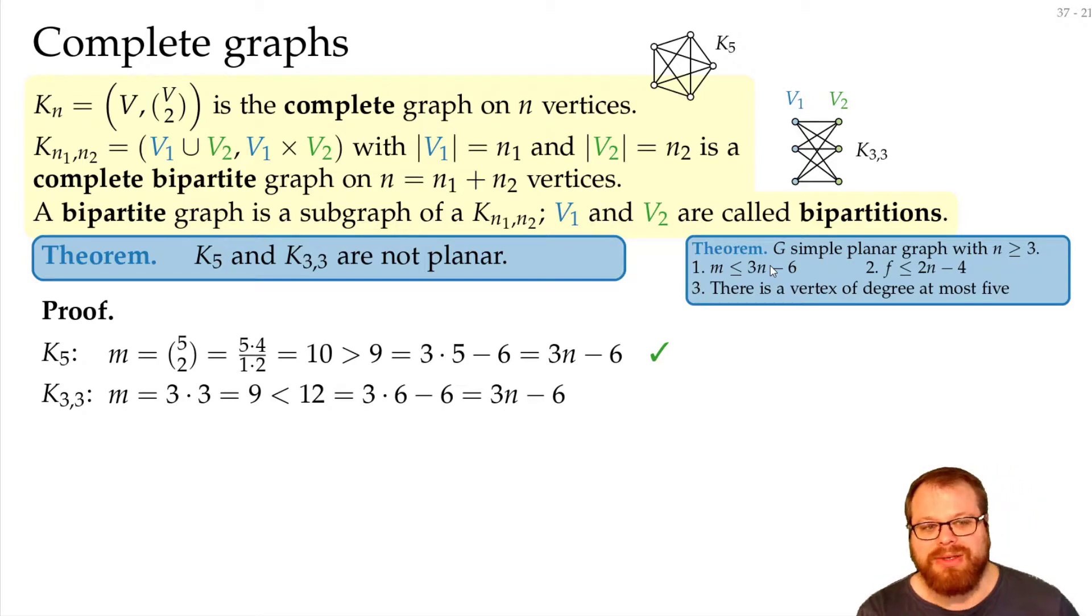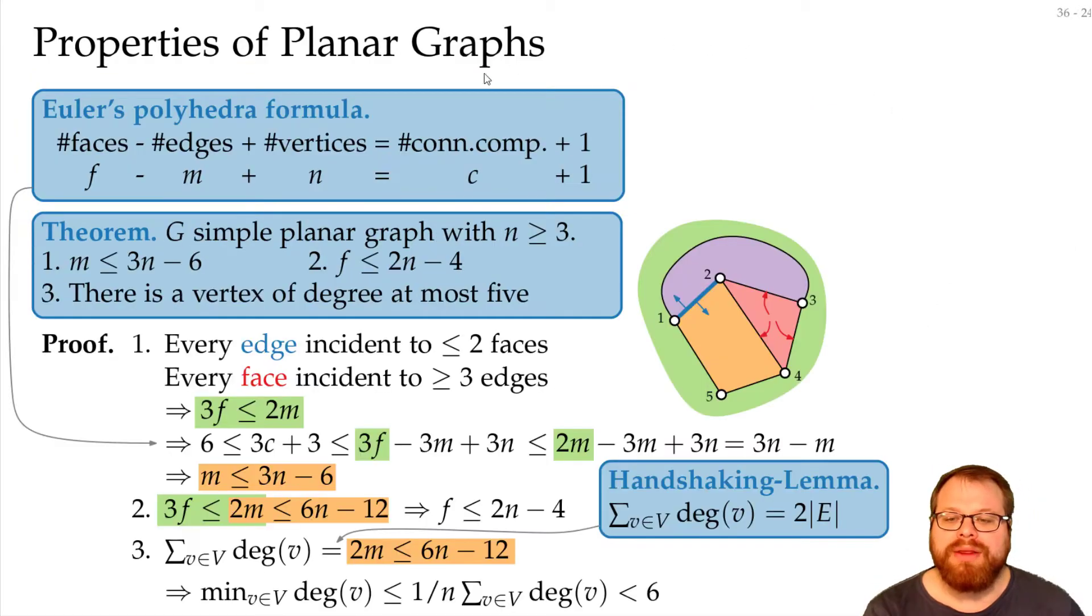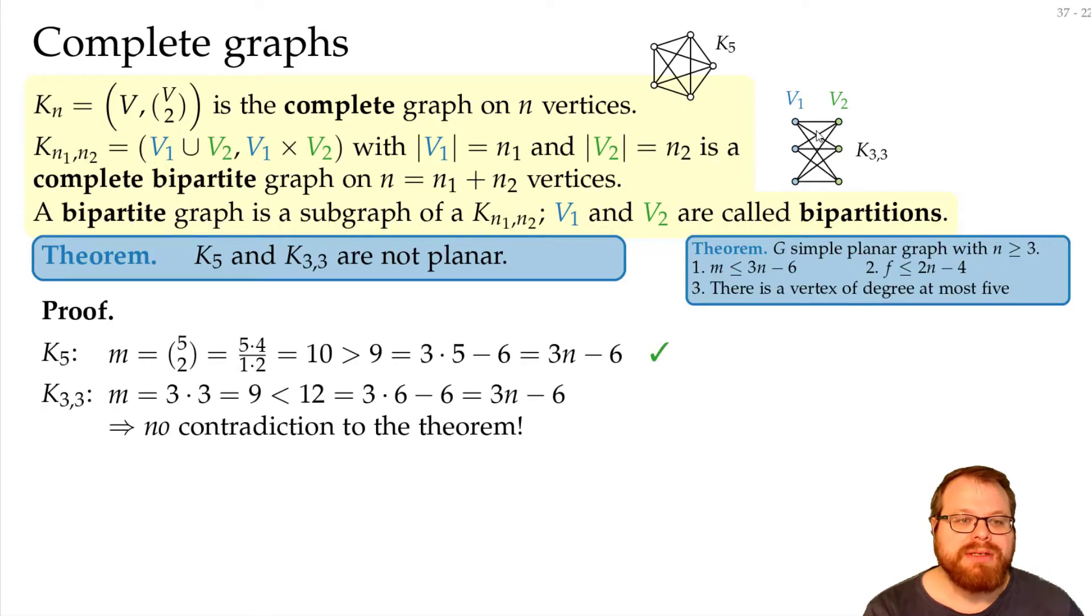But I told you it is not, so how can we prove that? Well, in the counting argument we had here, we said that at every face there lie at most 3 edges. But this here is a bipartite graph. So there is no edge between a blue and a blue and no edge between a green and a green vertex. What does that mean?